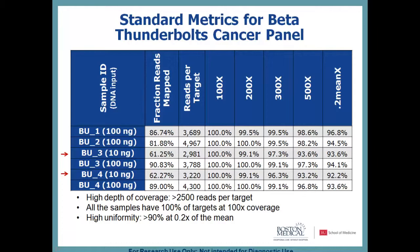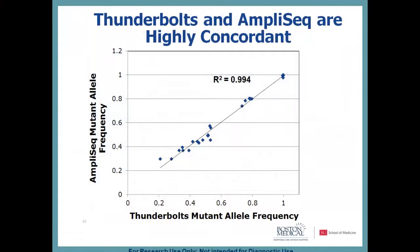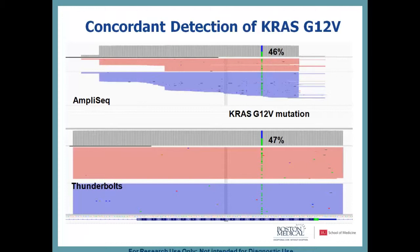We also compared minor allele frequencies with Thunderbolts versus AmpliSeq and found great correlation. Here is an IGV snapshot of a KRAS G12V mutation — called at 46% in AmpliSeq and 47% in Thunderbolts. Our experience is that the Illumina data is a lot cleaner than the PGM data. You can see all of those miscalled reads coming out of the PGM sequencer, whereas the Illumina data looks to be much cleaner.